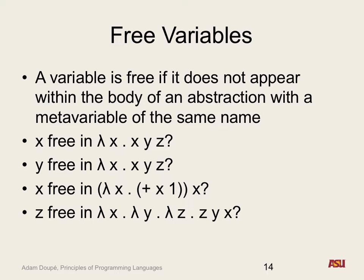Is Z free in the expression? Z is not free — it's a parameter. How would you read this as a function? It takes in three parameters: X is the first, Y the second, and Z the third. All it does is rearrange the order — input was X, Y, Z, and the output flips it to Z, Y, X.